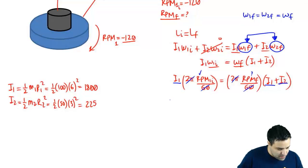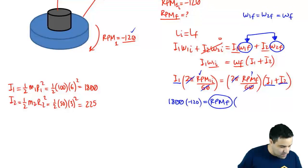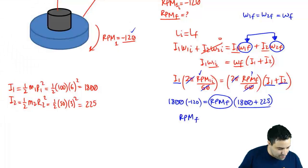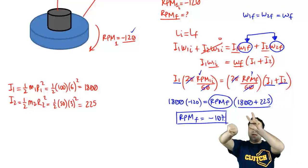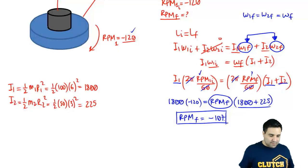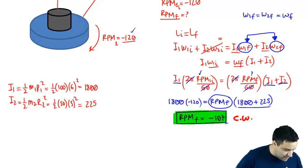Plugging back in: 1800 × (−120) = RPM_final × (1800 + 225), which gives RPM_final × 2025 = −216,000. Solving, RPM_final ≈ −107. This makes sense — the disk was spinning at 120 RPM, and once you add something on top it slows down a little, going from 120 to 107, still spinning in the same negative (clockwise) direction. So the final RPM for Part A is 107 clockwise.